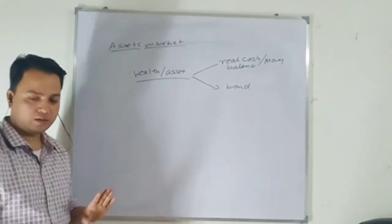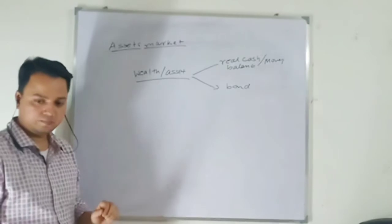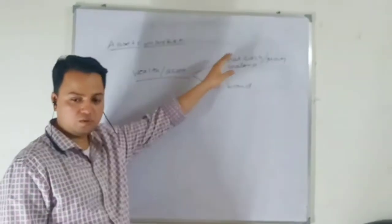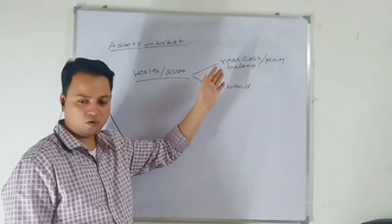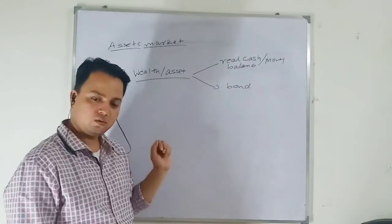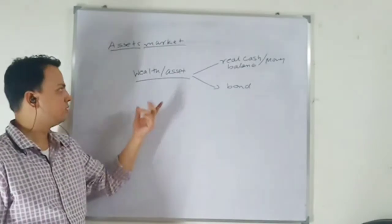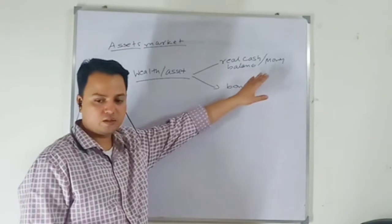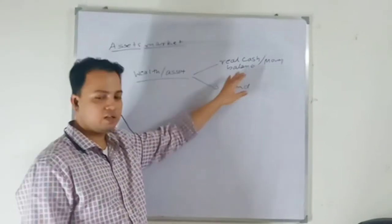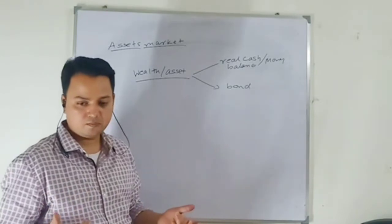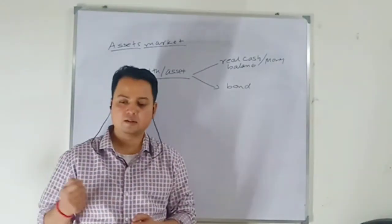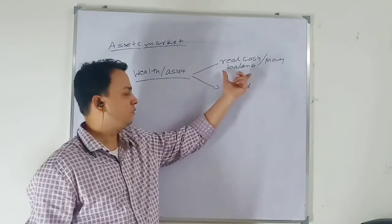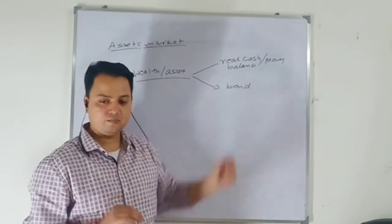Today we are going to talk about the asset market. Asset markets are the markets in which money, bond, stock, houses, and any other form of asset are traded. In the simple Keynesian formulation, the wealth or asset is kept in the form of idle cash balance — or money — and bond. Money has uses other than transaction purpose; money acts as a store of value. From that, we have a real cash balance concept.